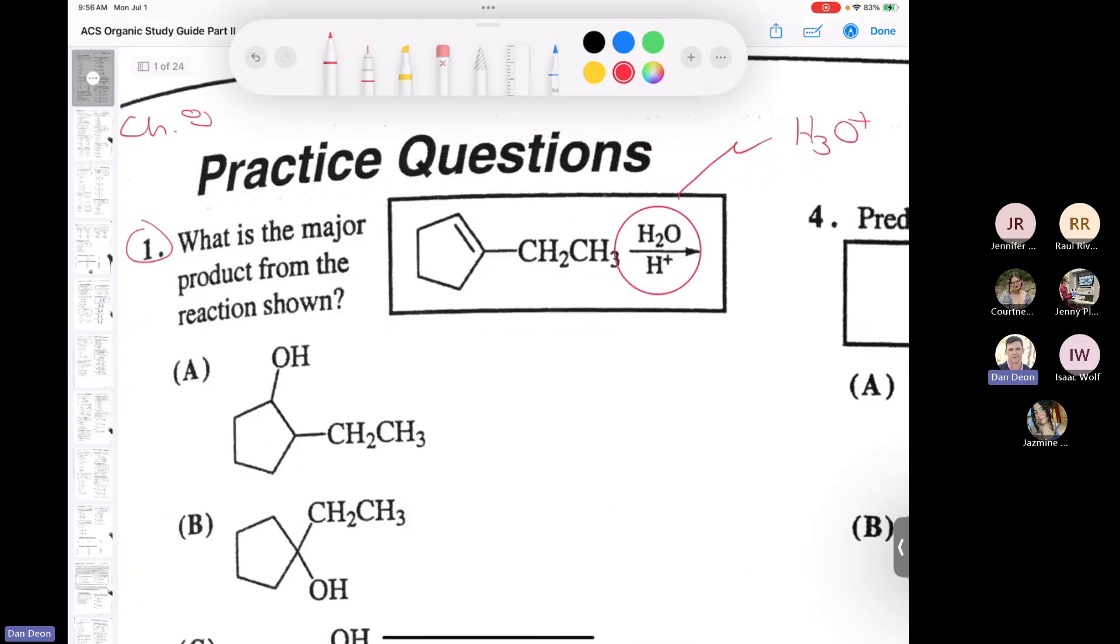So if I had a reaction like this, can anybody tell me, am I going to get Markovnikov or anti-Markovnikov addition of water here? It's not a trick question. Just taking an alkene that's unsymmetrical and treating it with H3O+.